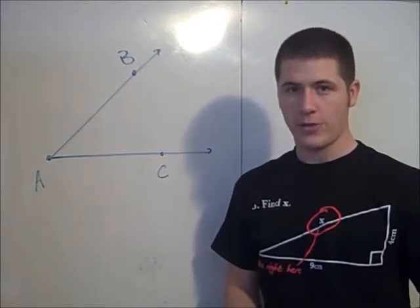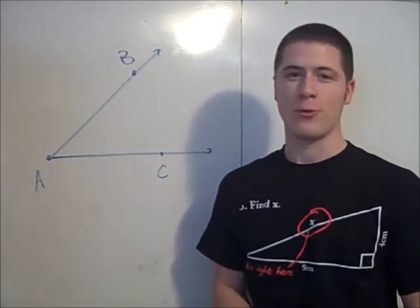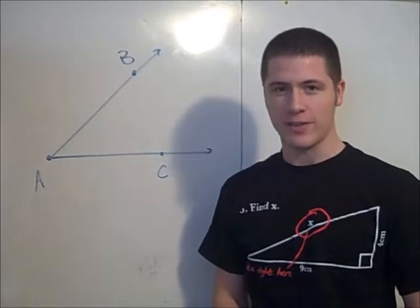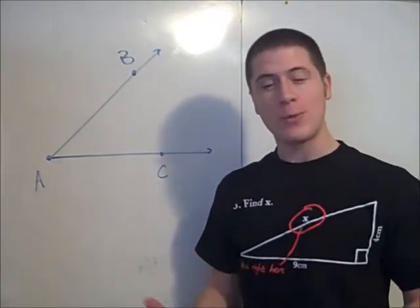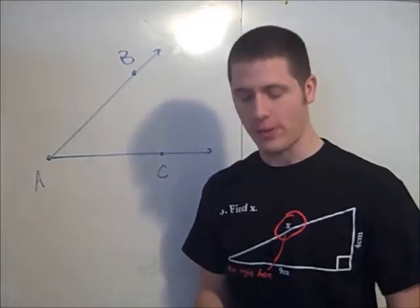The angle bisector theorem is really important in proving that the incenter of a triangle is equidistant from all three sides of the triangle. So here will be a proof of the angle bisector theorem.